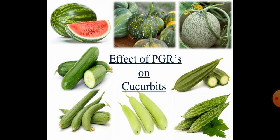In a previous lecture we discussed about the major cultivation of cucurbits — cucumber, bottle gourd, bitter gourd, ridge gourd, and sponge gourd. These are the major cucurbits we completed in the previous lecture. Now today we are going to complete the remaining and important part of cucurbits, that is the effect of plant growth regulators on cucurbits.